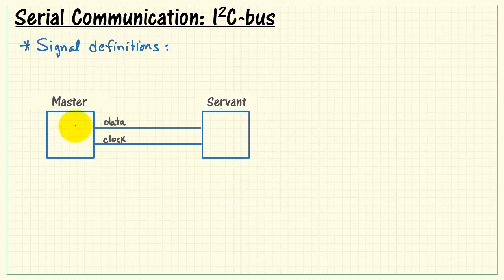We have two wires linking the two together. The data line is called SDA for serial data, and the clock line is called SCL for serial clock.